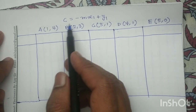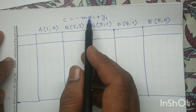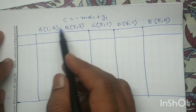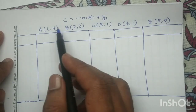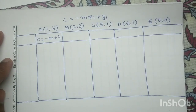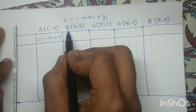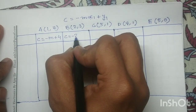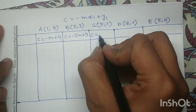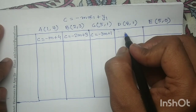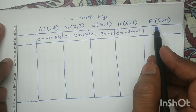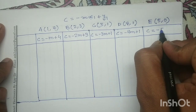For point a (1,4), substituting x₁=1 and y₁=4 into the standard equation, c becomes −m + 4. For point b (2,3), c becomes −2m + 3. For point c (3,1), c becomes −3m + 1. For point d (4,1), c becomes −4m + 1. And for point e (5,0), c becomes −5m.